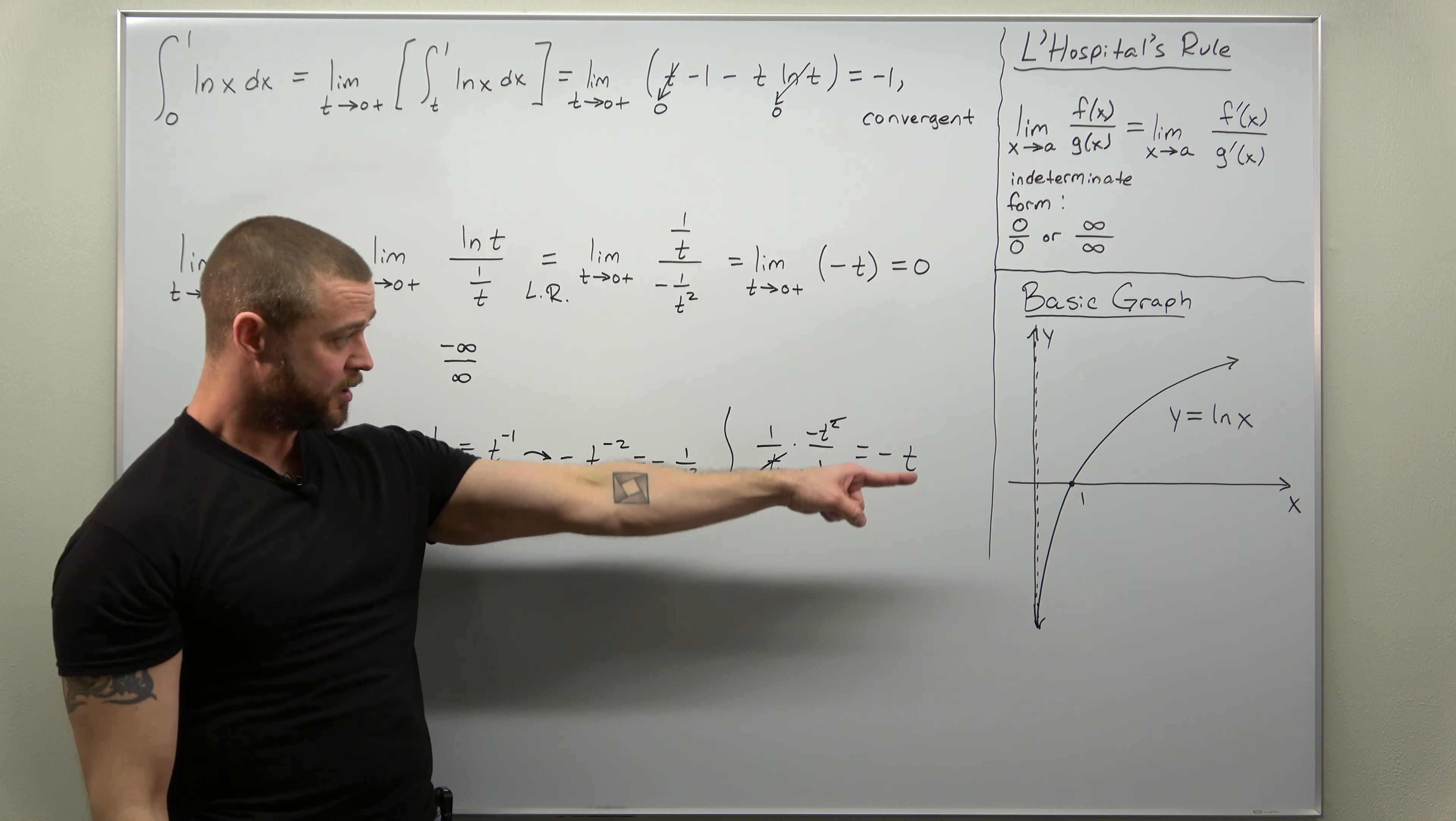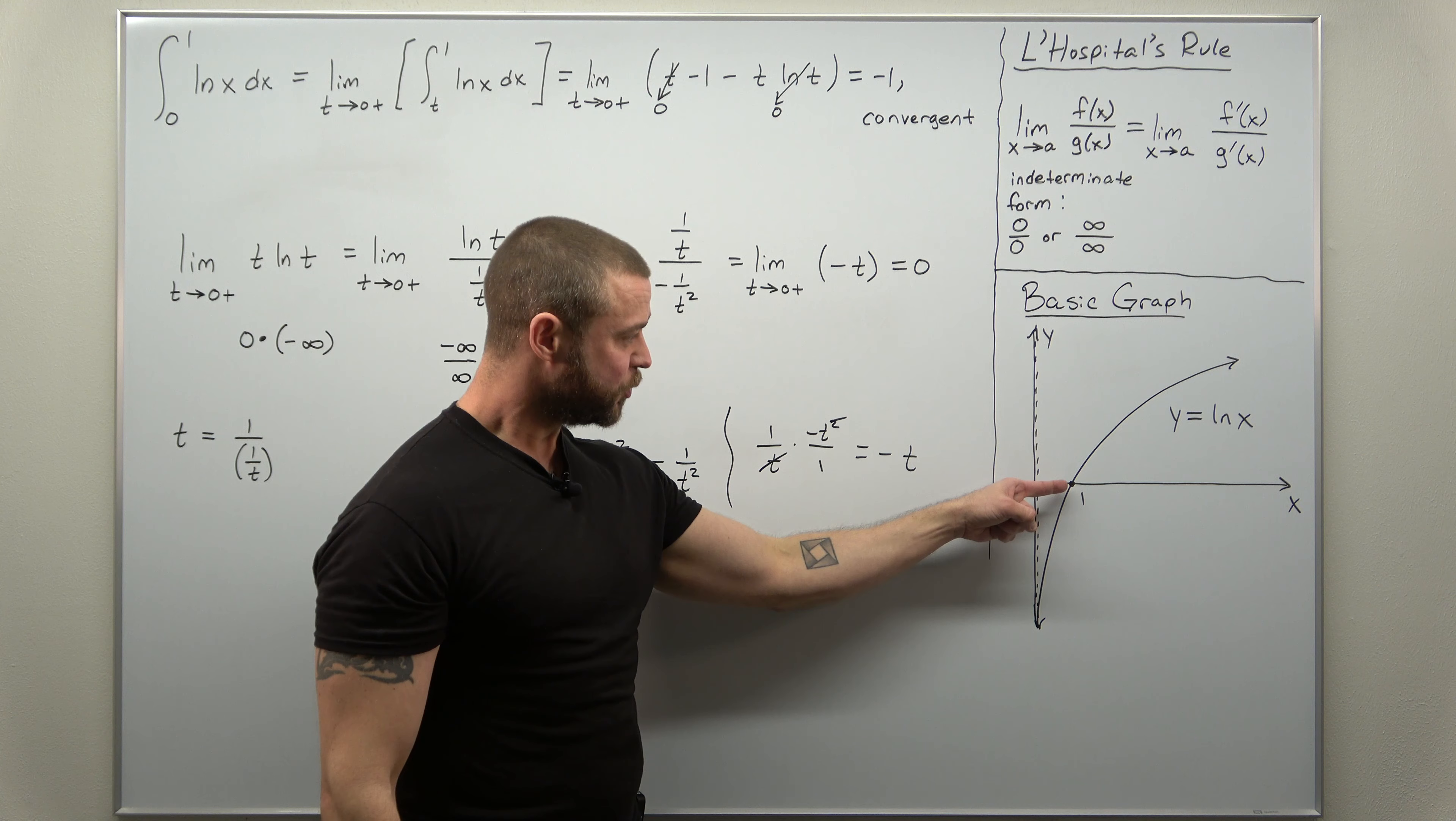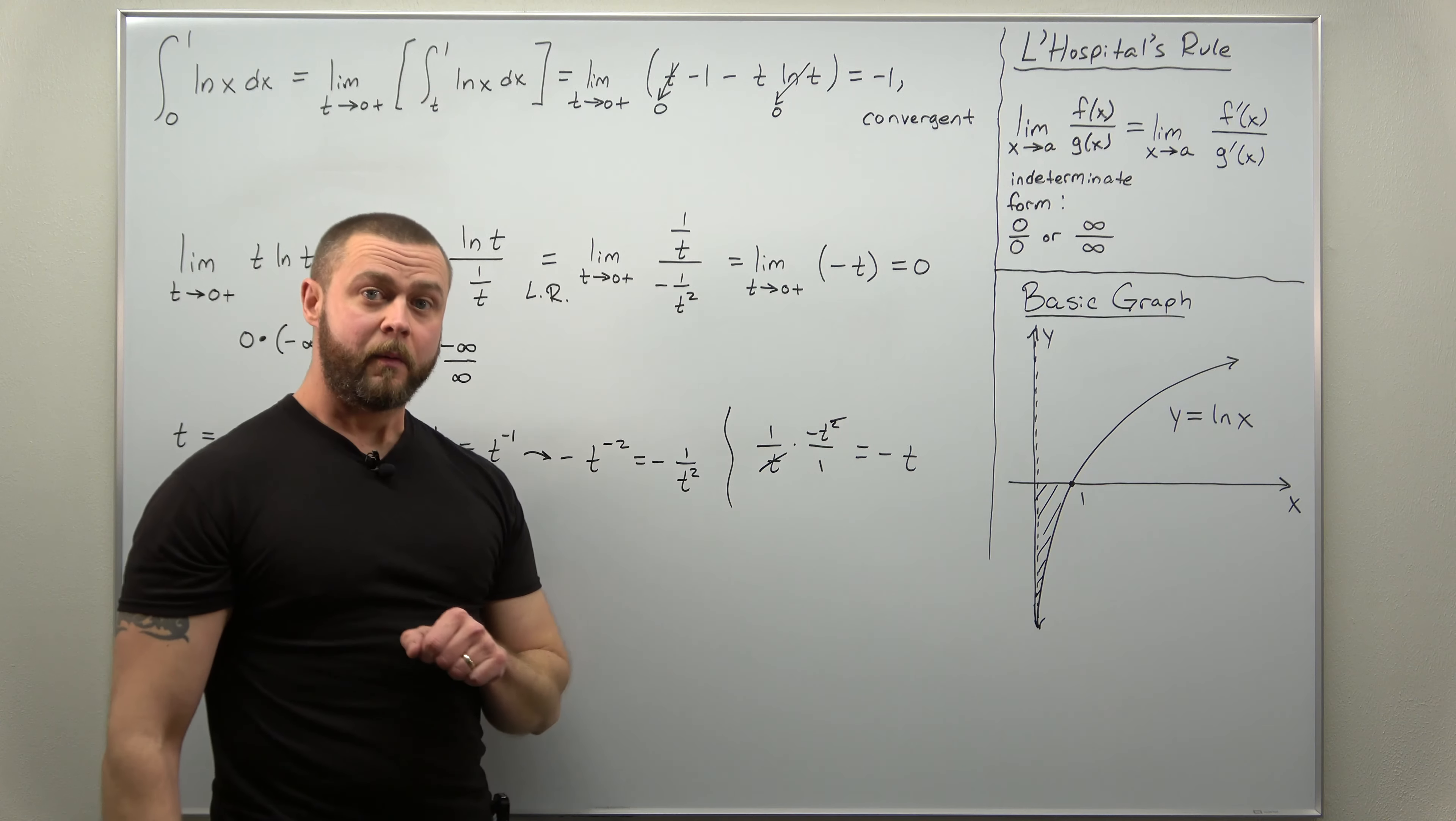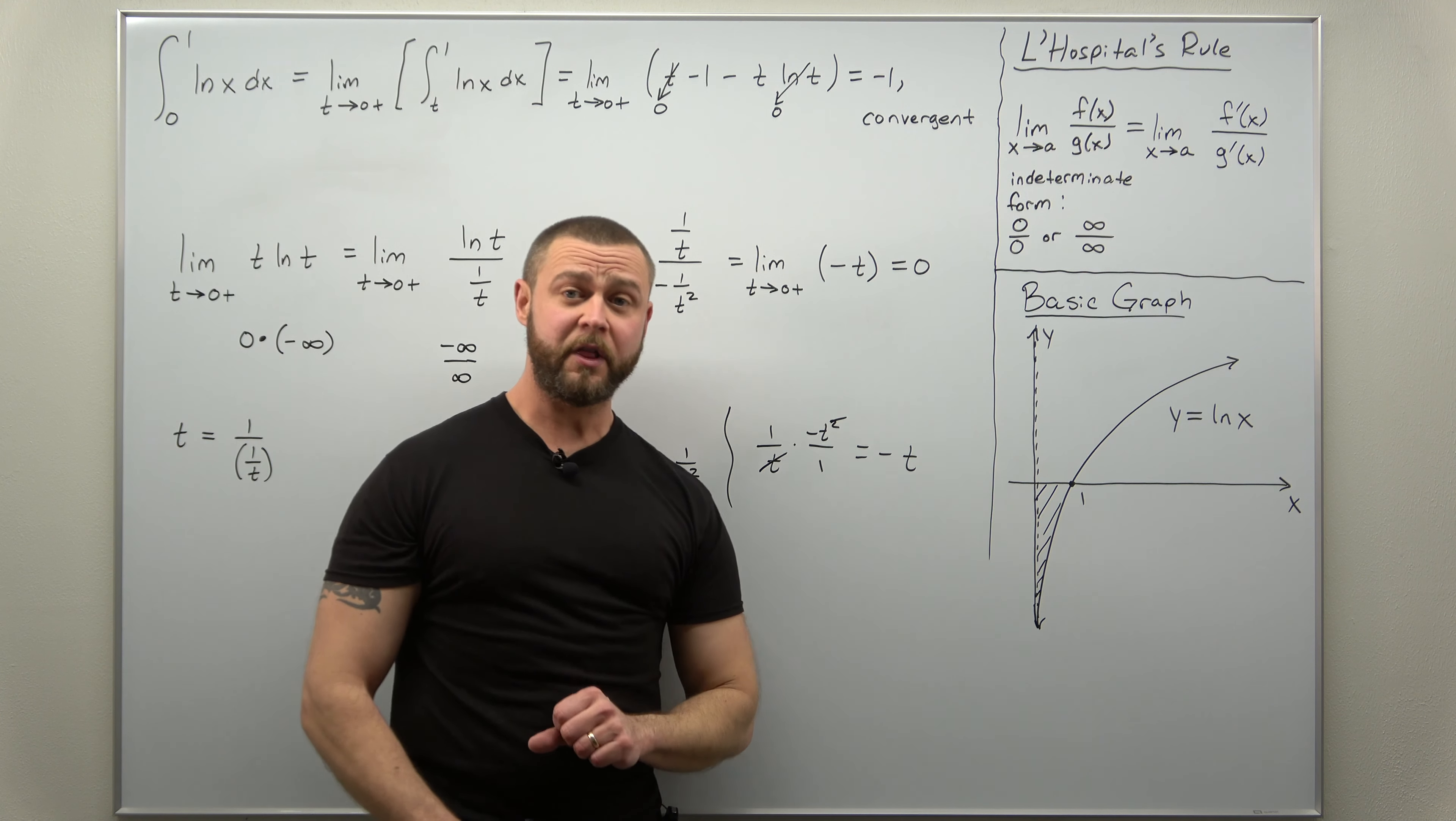Now, this one has a nice interpretation from the graph that we already have there. We have the integral from 0 to 1 of natural log of x. And if you think of an integral as representing area, here's 0. There's 1. We're looking at the area from the x-axis to the graph. So this area that we just found, negative 1, matches what we expect there. We have the graph is below the x-axis and we can interpret that as negative area. So this matches what we expect graphically, which is really nice.